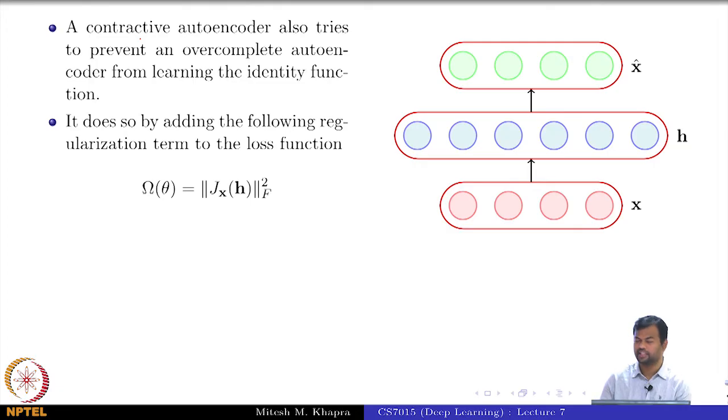What is this term? Let's see some things which you already know. What is this Frobenius norm of some matrix? What is this matrix Jacobian? What are the two variables here that you see? h and x. h is a vector, x is a vector. It's some function between two vectors, and it is a matrix.